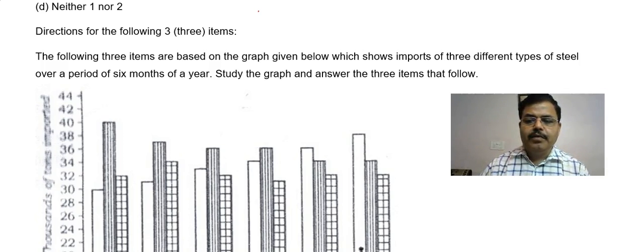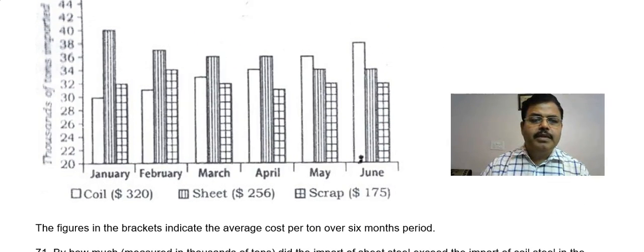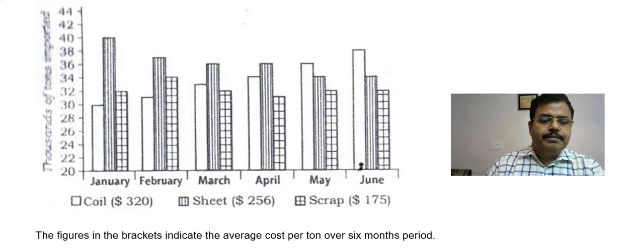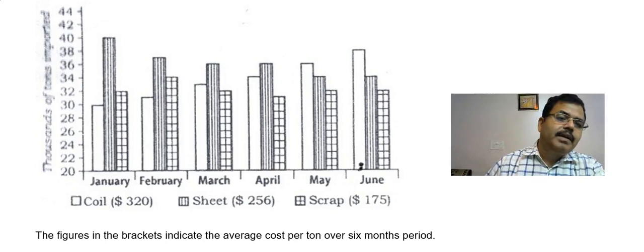So three questions on the basis of this: coil steel, sheet steel, and scrap. These are the three different amounts. Sheet and scrap are imported. This is the quantity in thousands of tons imported, and this is the price basically.